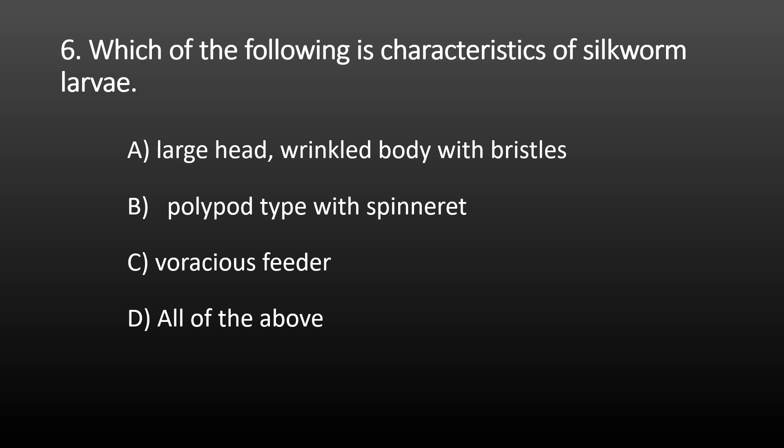Next MCQ: which of the following is a characteristic of silkworm larvae? Options are: A) large head with wrinkled body and bristles, B) dorsal polyboar type with spinneret, C) voracious feeder, and D) all of the above. The larvae are voracious feeders, and the spinneret which produces silk is present. Larvae also have a large head with a wrinkled body and bristles. The correct option is all of the above.